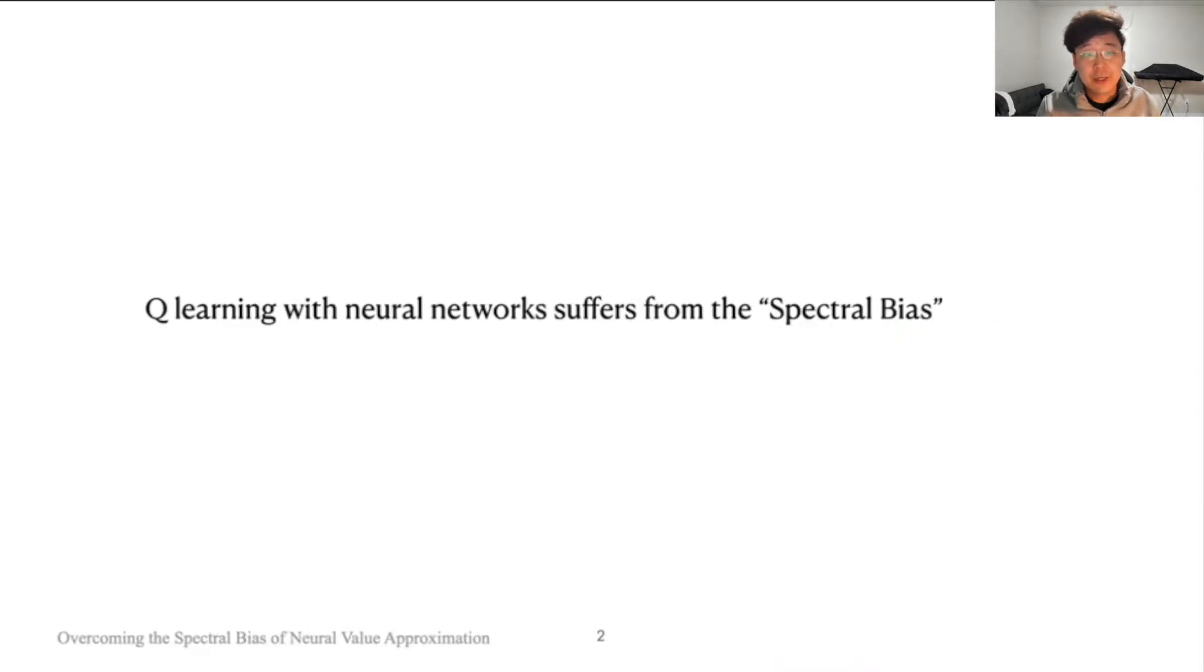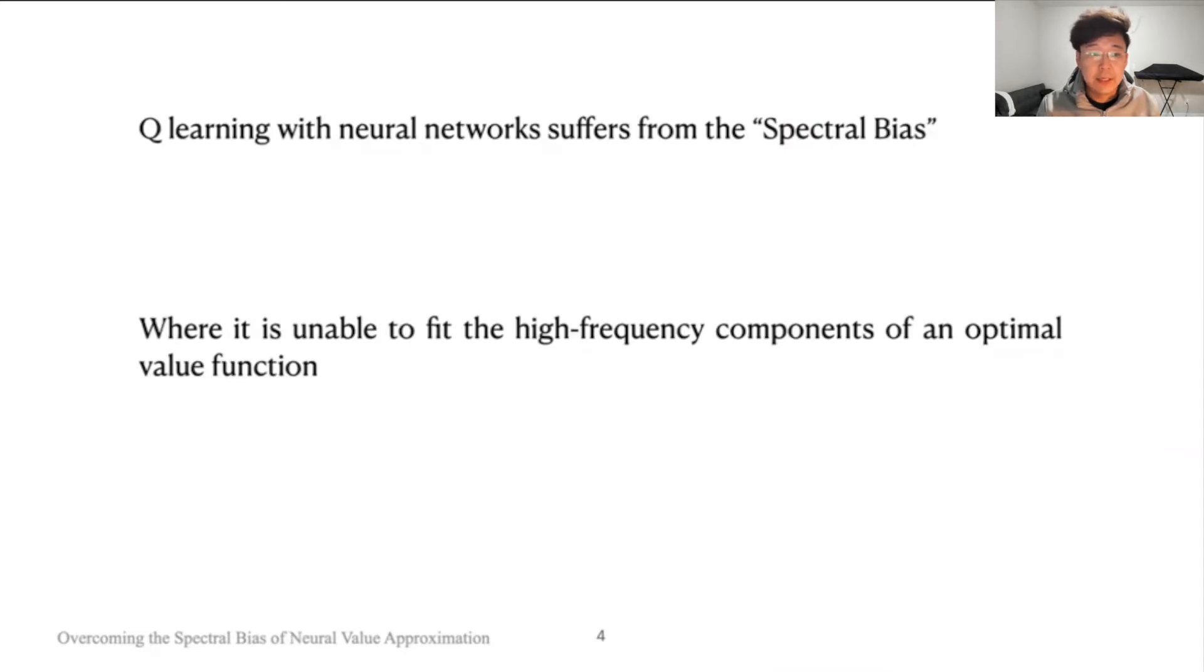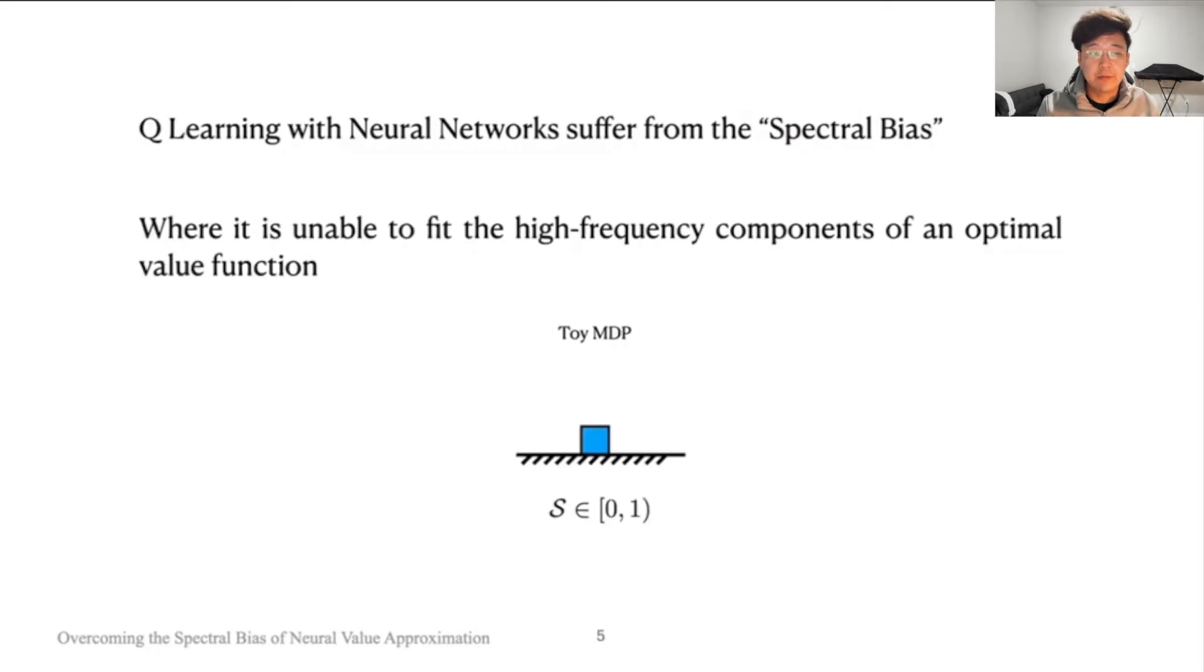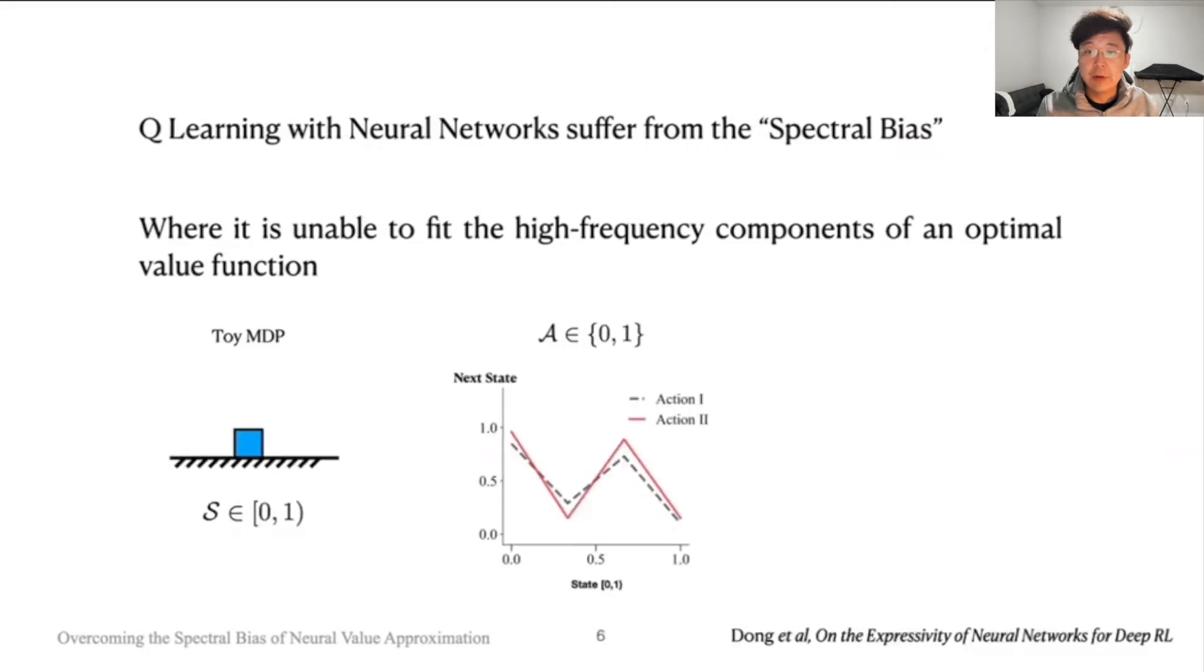Q-learning with neural networks suffers from the spectral bias, where it's unable to fit the high-frequency components of an optimal value function. We can illustrate this problem by looking at a one-dimensional toy MDP problem with simple piecewise linear forward dynamics and two actions.